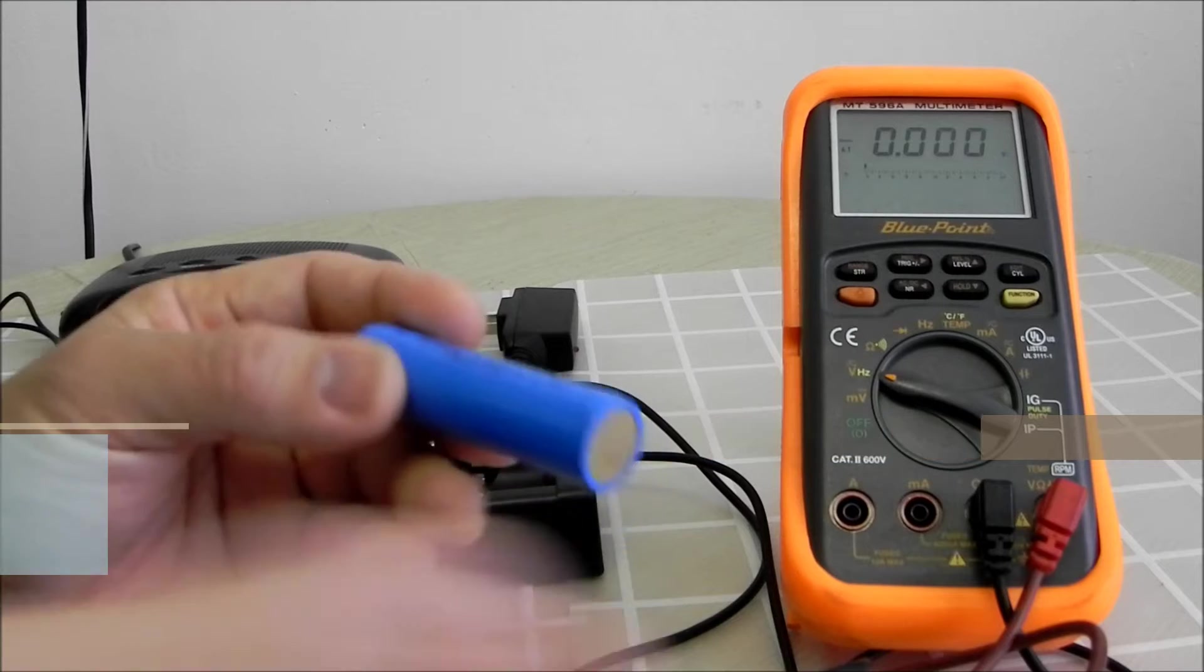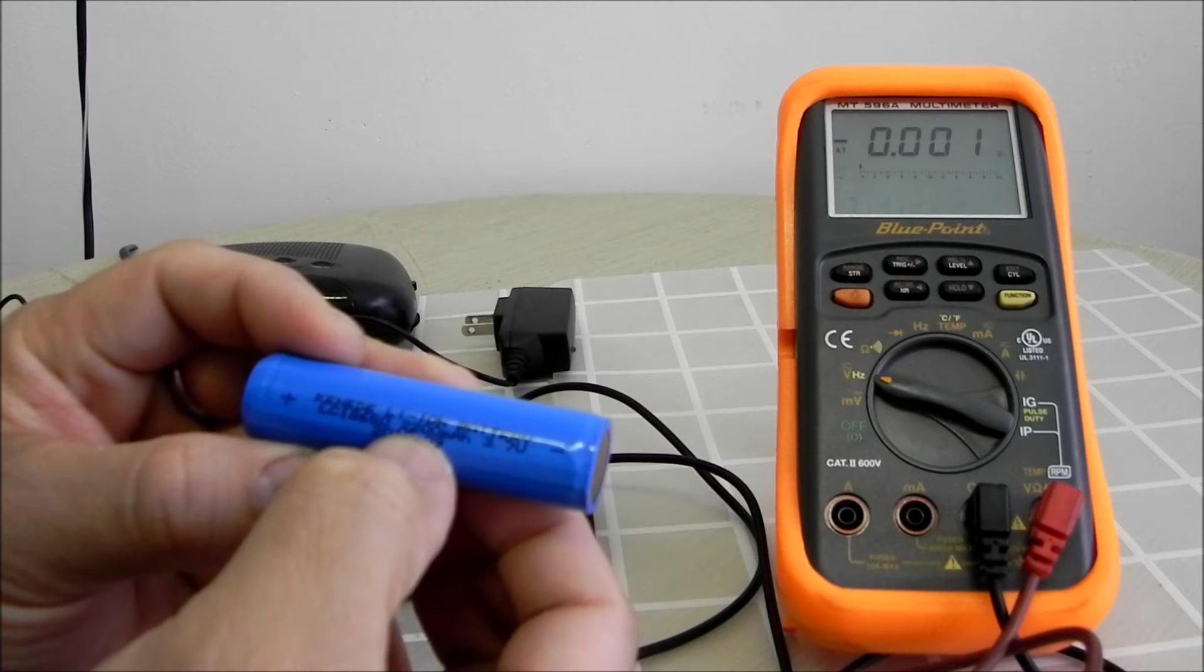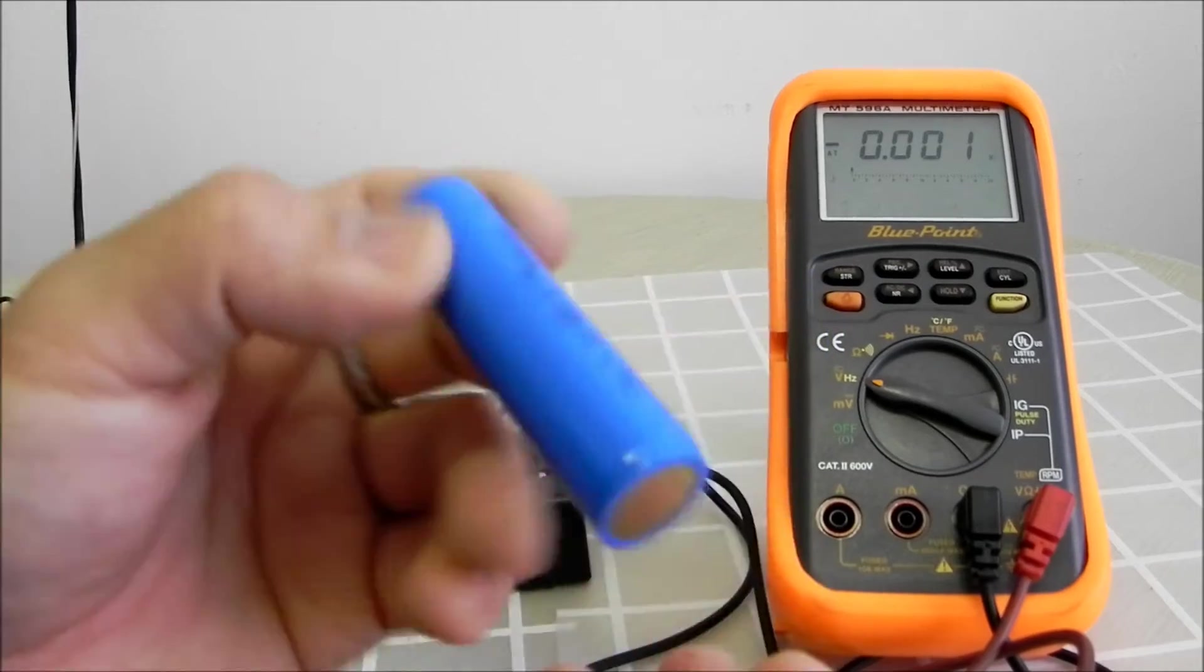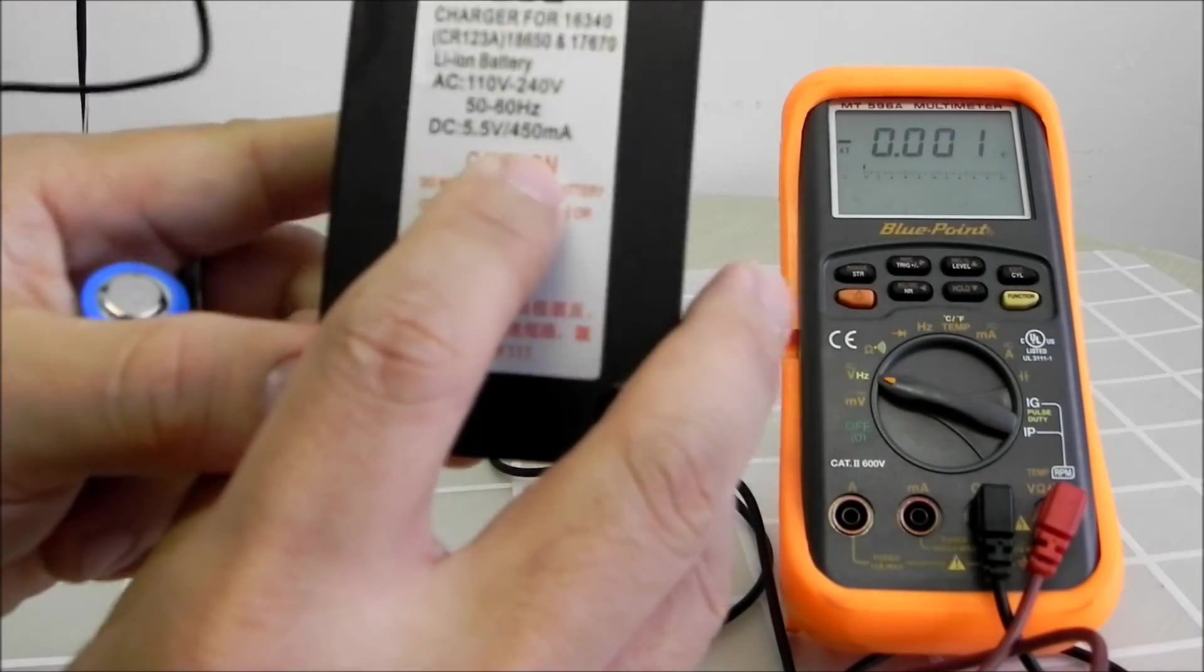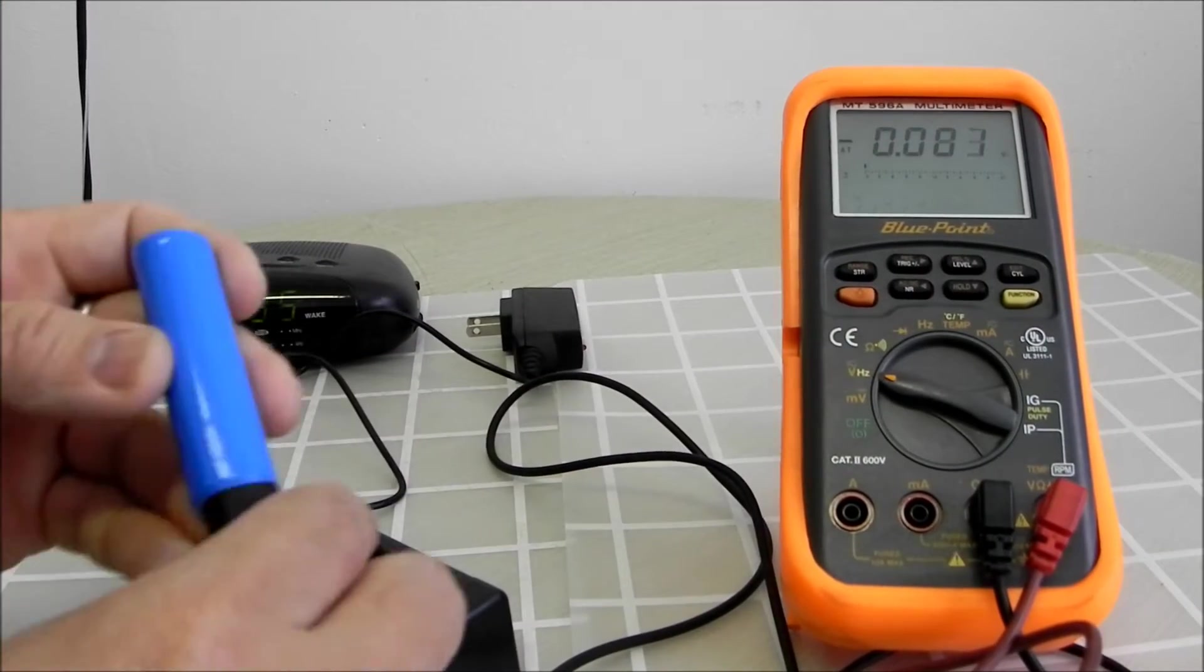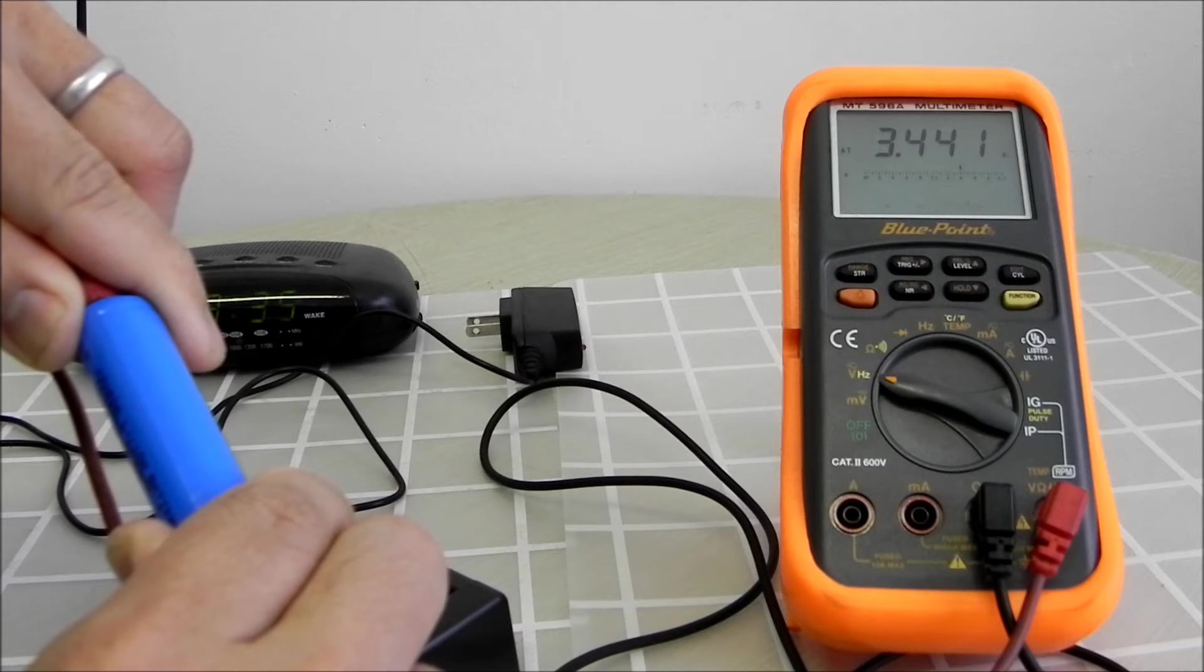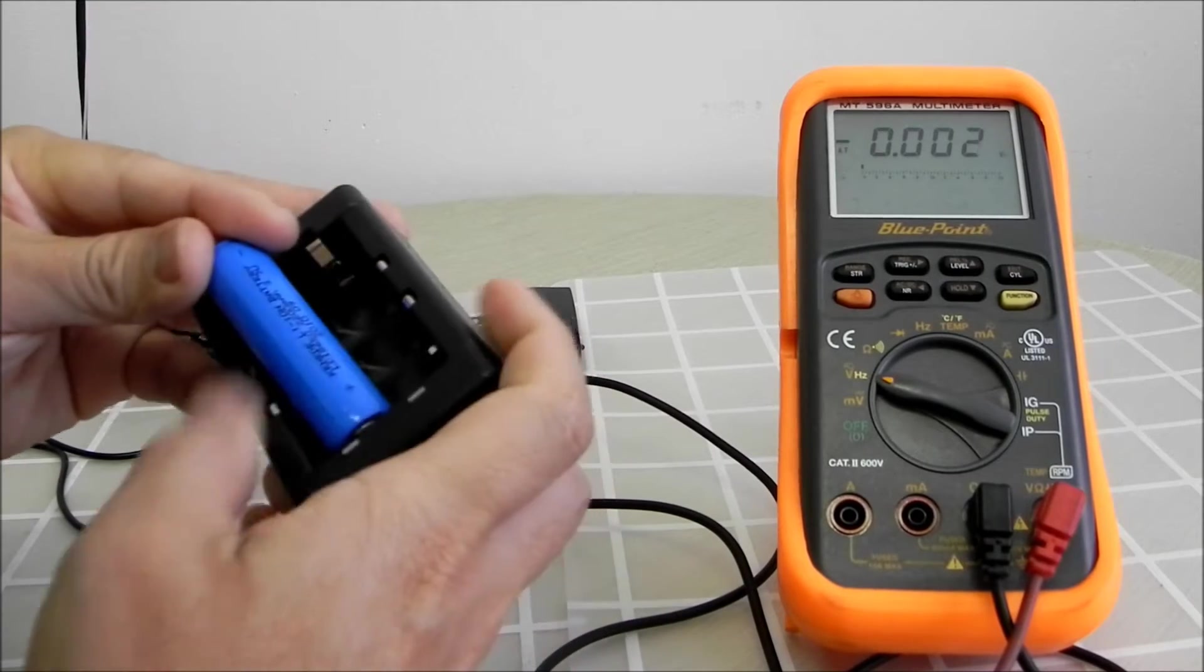Okay, right now, we're trying to charge a second battery. The rating for this battery is 2200 milliamps per hour. I don't know if the camera can catch this. This is 2200 milliamps per hour is the rating for this battery. And, the charger, again, the rating is 450 milliamps. So, let's check the voltage. It's 3.4 volts. So, here we go. It's charging our second battery.